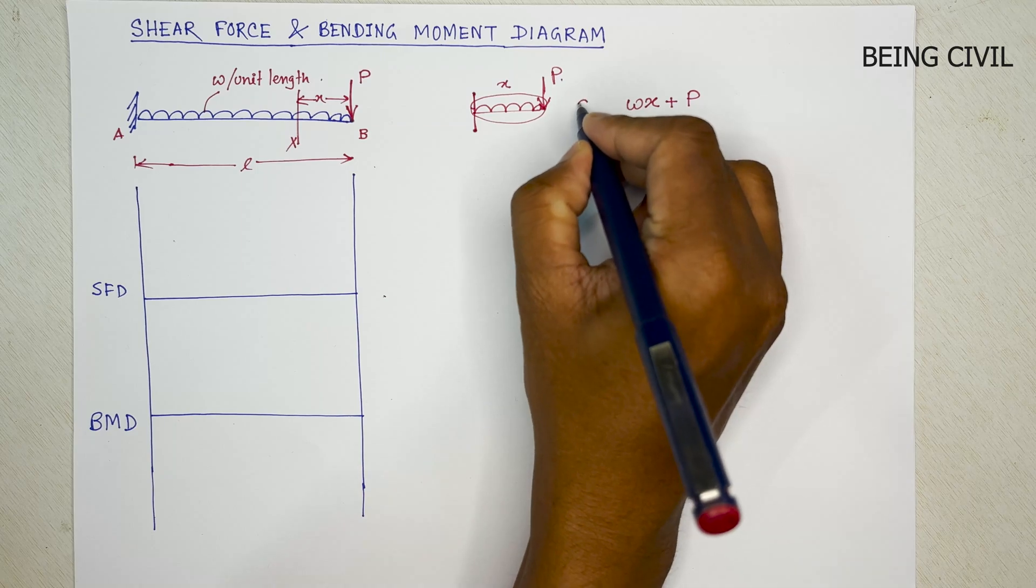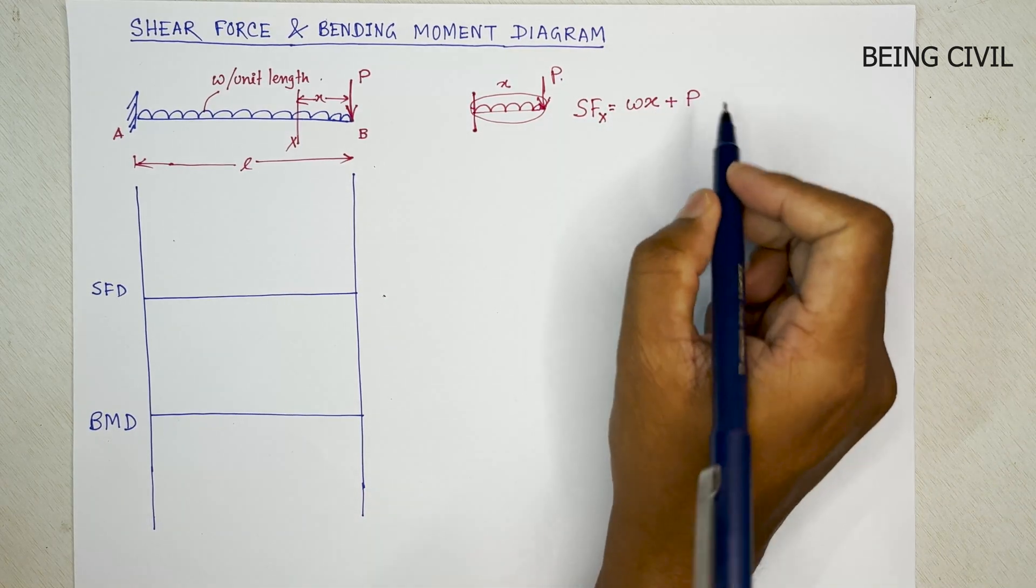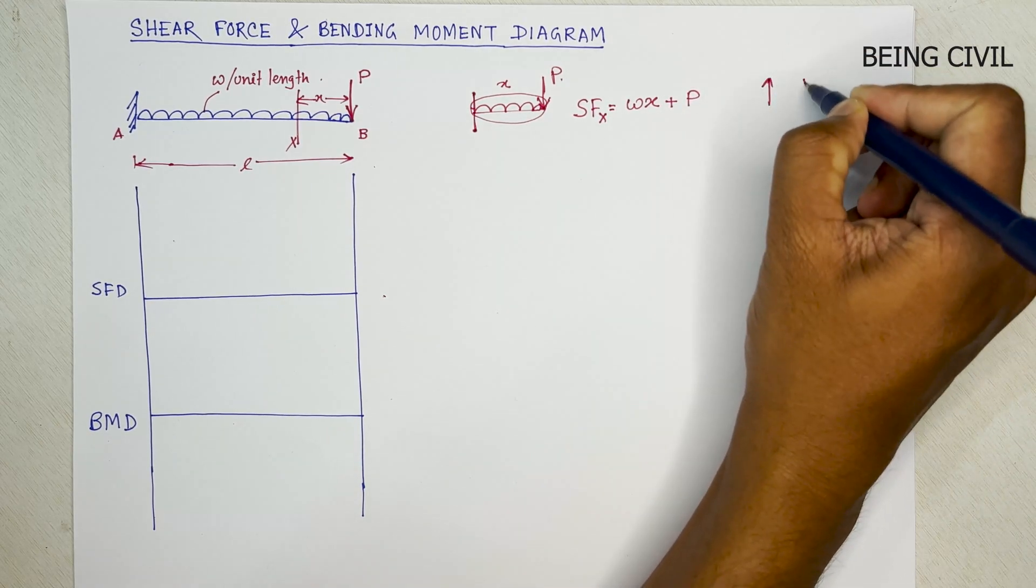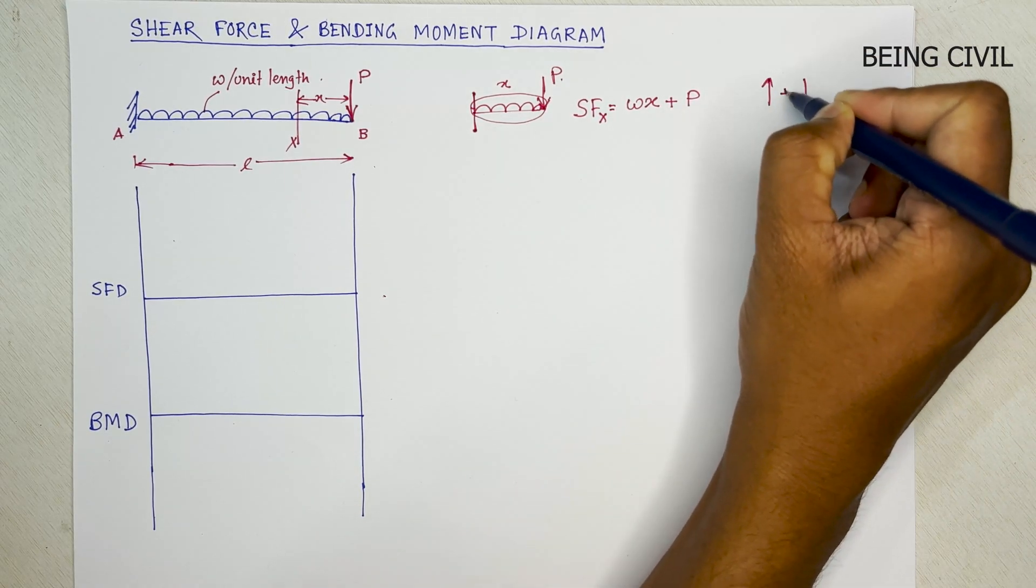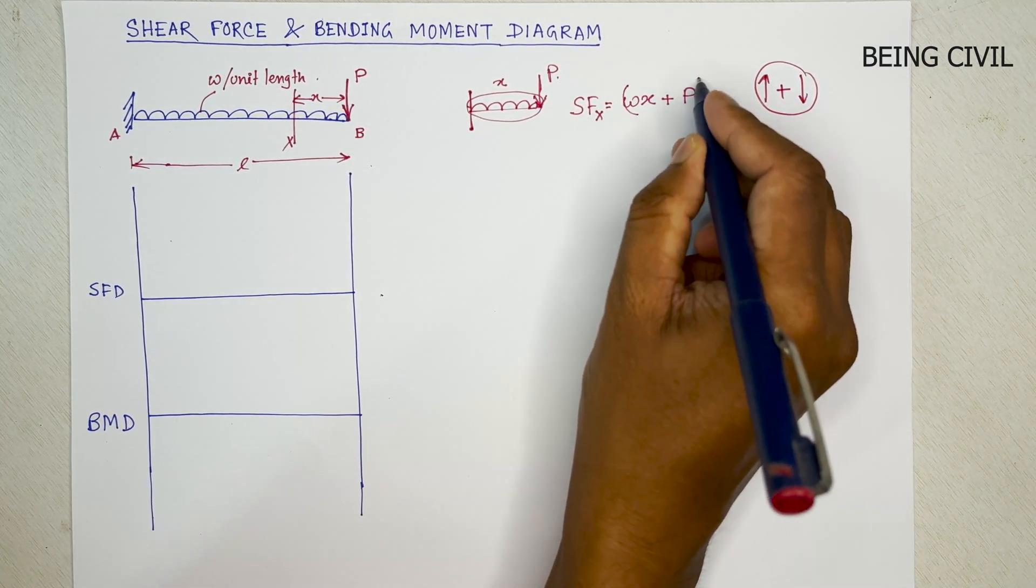So the shear force at a distance x is Wx plus P. And the nature of the force is left up right down, so this is positive.